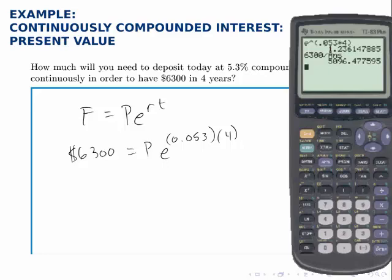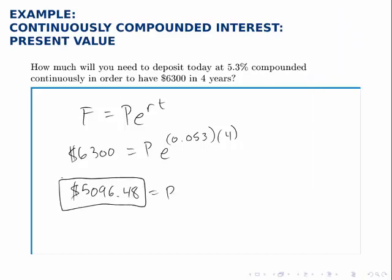And I find that the present value that's needed to grow to $6,300 in four years is $5,096.48. So that's the answer, P equals $5,096.48.